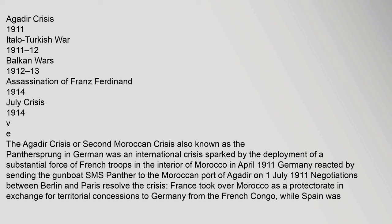The Agadir Crisis, or Second Moroccan Crisis — also known as the Pantherspring in German — was an international crisis sparked by the deployment of a substantial force of French troops in the interior of Morocco in April 1911. Germany reacted by sending the gunboat SMS Panther.